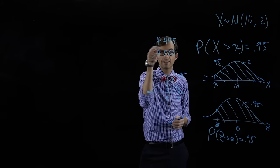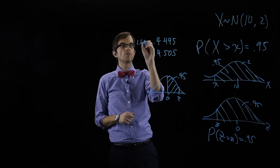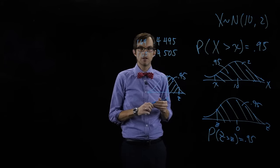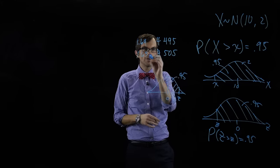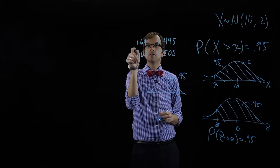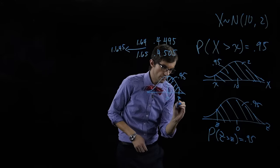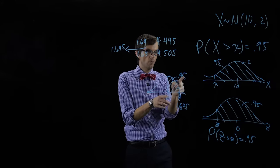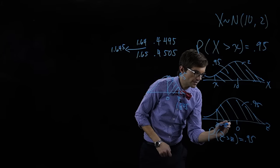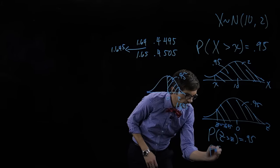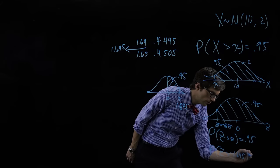Point 0.45 is exactly in the middle of those two values. 0.4495 is associated with z = 1.64, and 0.4505 is associated with z = 1.65 — that is, row 1.6, column 0.05. Since we want something in between, we take z = 1.645. This means the value down here is negative 1.645, and the probability that z is greater than negative 1.645 is 0.95.